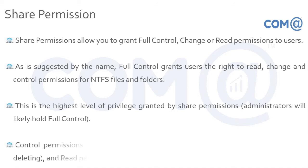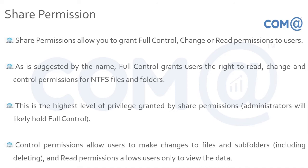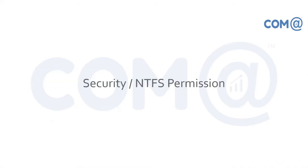Share permissions have three types of access controls. One is full control, one is change permission, and one is read permission. With full control on the shared folder, you can add sub-folders, add files, delete existing folders, delete existing files, and make changes. This is the highest level of access control.